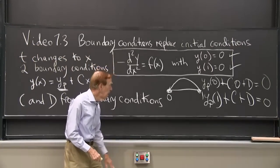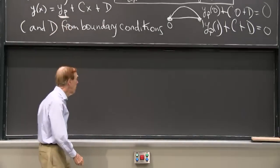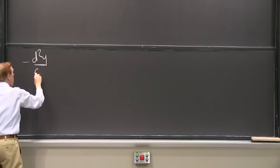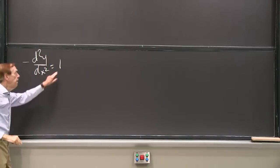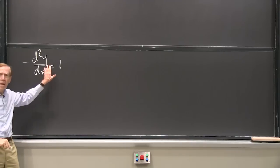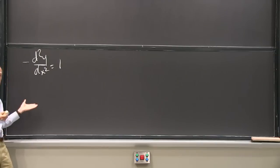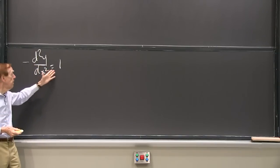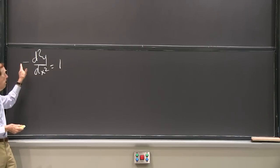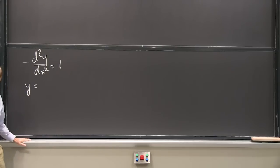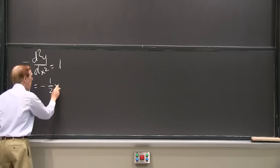Let me start with the first example. So my first example is going to be the equation minus d second y d x squared equal 1. That will be my load. f of x is going to be 1. So I'm looking for a particular solution to that equation. And of course, I can find a function whose second derivative is 1 or maybe minus 1. My function will be, if I want the second derivative to be 1, then probably a half x squared is the right thing. And that would give me a minus. So I think I have minus a half x squared.